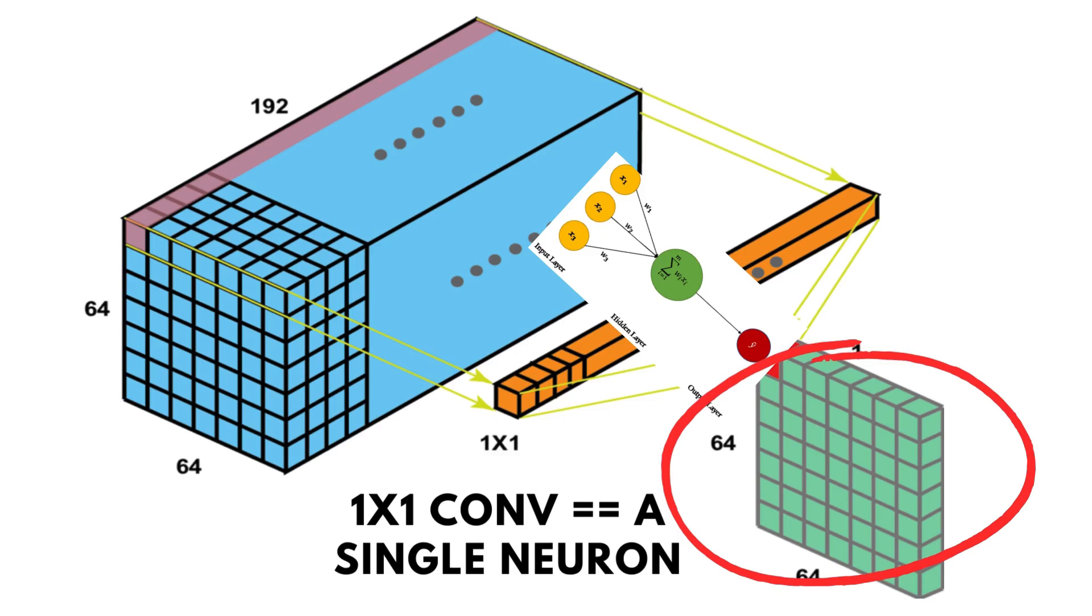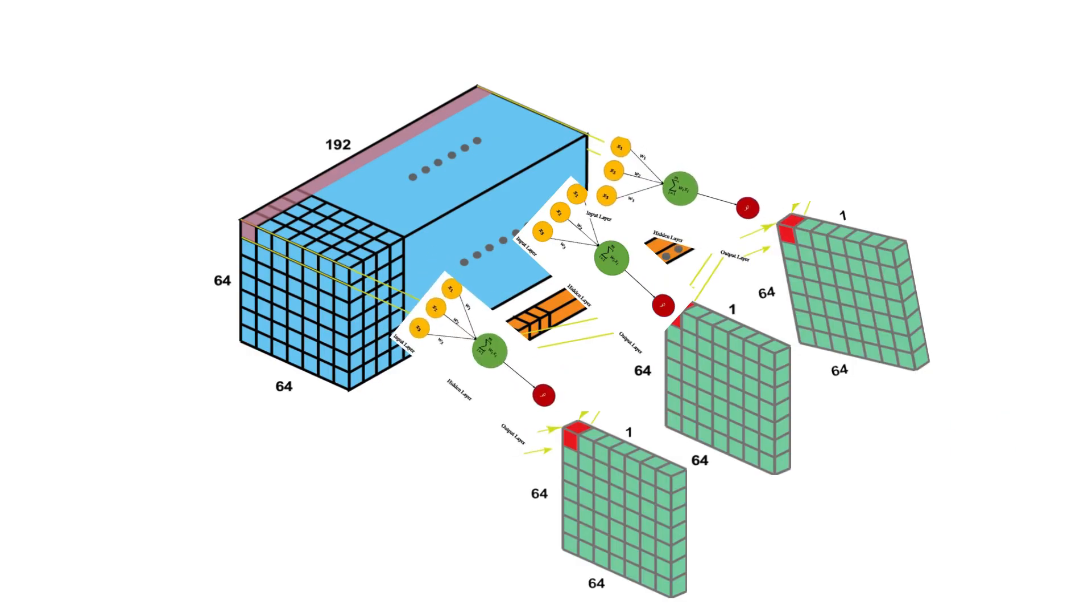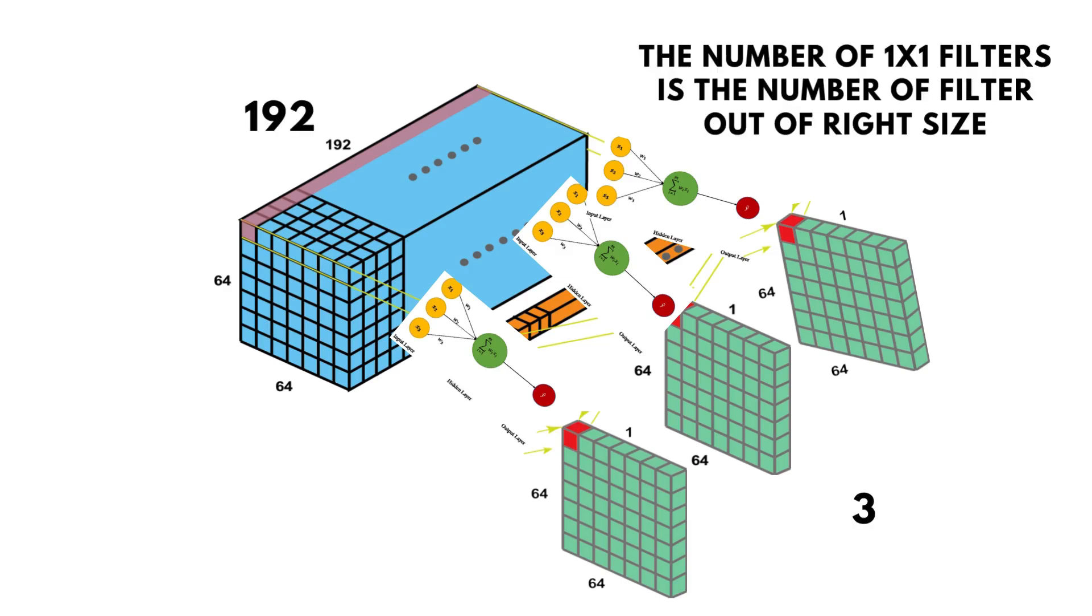If this is the case, then you can modulate the number of filters that you get out by simply adding more of these neurons. So if you want to go from feature filter size of 192 to 3, you would just add 3 neurons in this layer. With the 1x1 convolution filter, the number of this filter or neuron is equal to the number of filter output at the end. Each of these filters has its own set of weights, so they learn different projection operations.